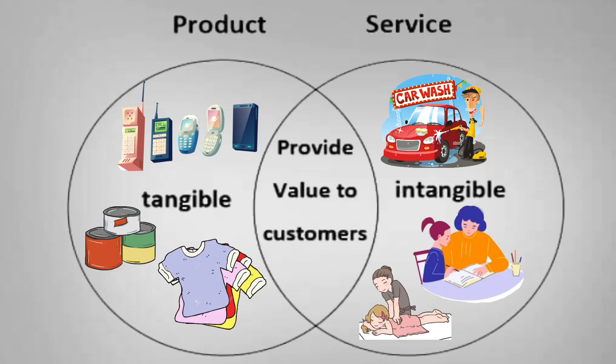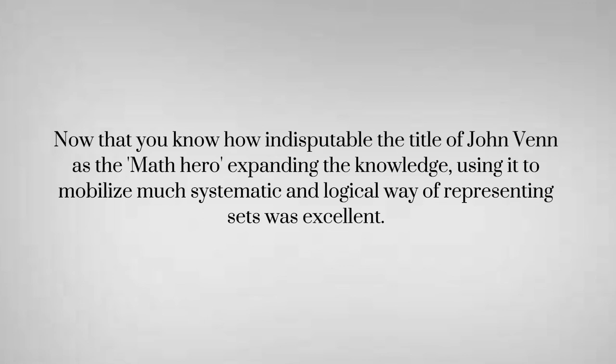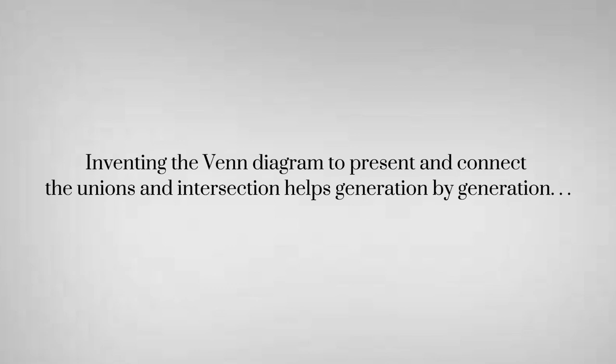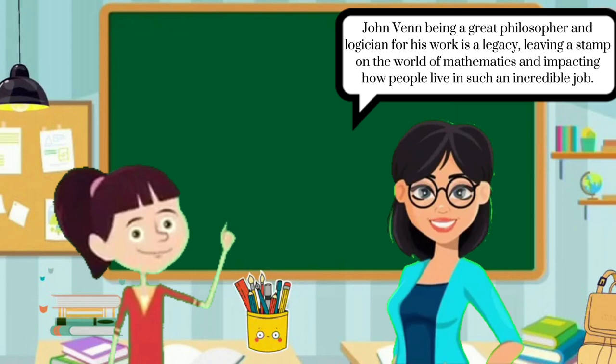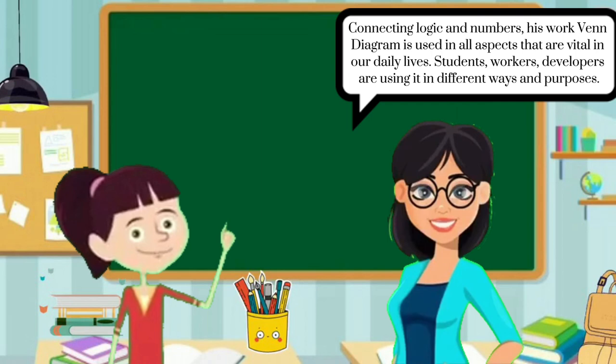Now that you know how indisputable the title of John Venn as the math hero is — expanding knowledge and using it in a much more systematic and logical way of representing sets was excellent. Inventing the Venn diagram to present and connect the unions and intersections helps generation by generation. John Venn, being a great philosopher and educator, his work is a legacy. His work connecting logic and numbers is used in all aspects vital to our daily lives — students, workers, and developers are using it in different ways and purposes. Wow, I have learned a lot! John Venn is indeed a math hero. I can't imagine set theory and mathematics without his invention.